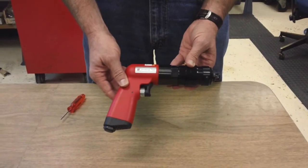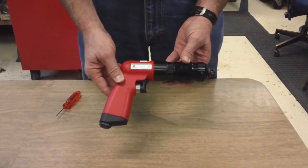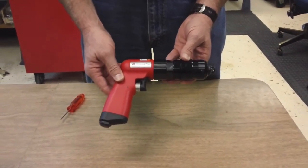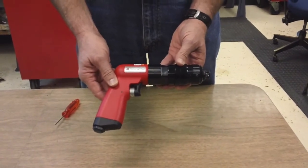This is Innovative Tooling Services TV or tool video, and today we're talking about the UT8897RS rivet shaver.